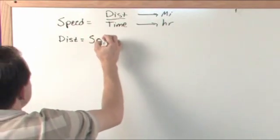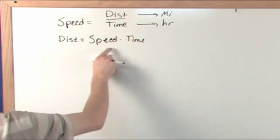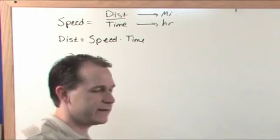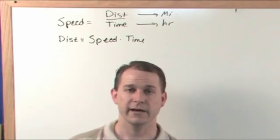I mean, this isn't rocket science here. If you know that you're going 60 miles an hour and you know that you're traveling for three hours, then you know that you must multiply those numbers together.